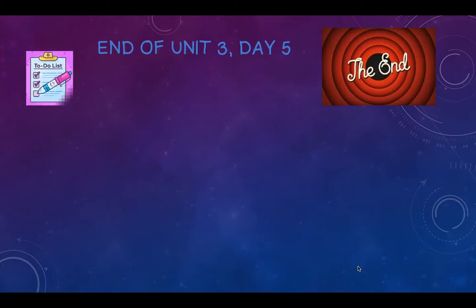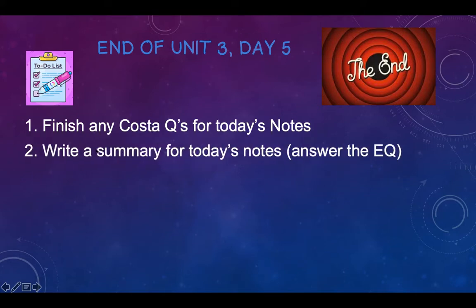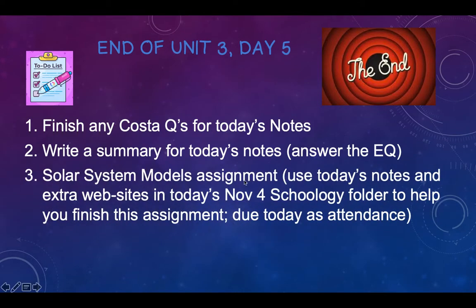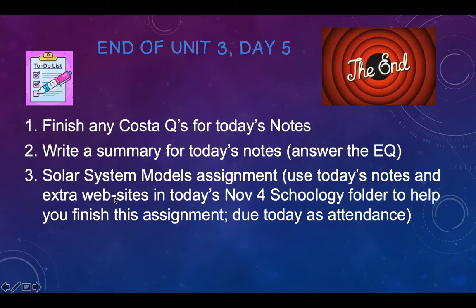That brings us to the end of our notes for today. Here's your to-do list: finish any COS questions if you haven't already, then write a summary — remember the essential question for today was what's the difference between heliocentric and geocentric, so that's all you need to focus on. There's also an assignment called Solar System Models with eight questions. You'll use what we talked about in today's notes, plus there are extra websites, a short video, and some readings on Schoology in today's folder. I'm using today's assignment as attendance, so if you won't finish it today, send me a message saying you've started it.